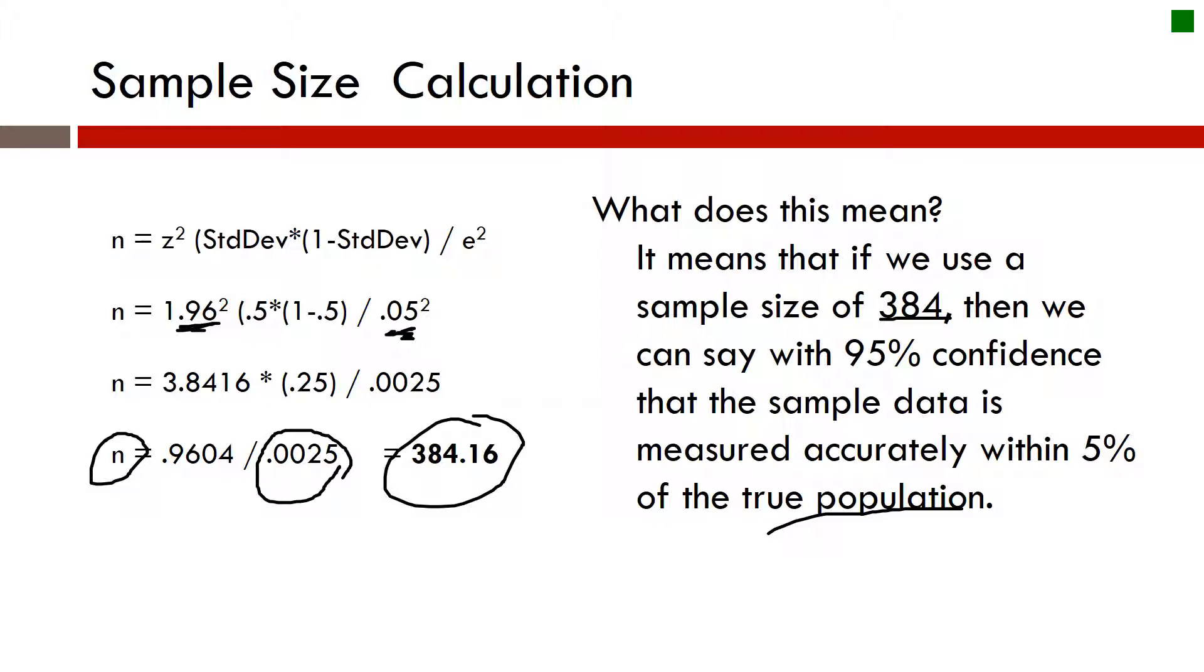This 0.5 is the most variable your data can be. If you change it, then you'll get something that's actually lower here and it won't have as big of an impact, or higher here and it won't have as much of an impact.